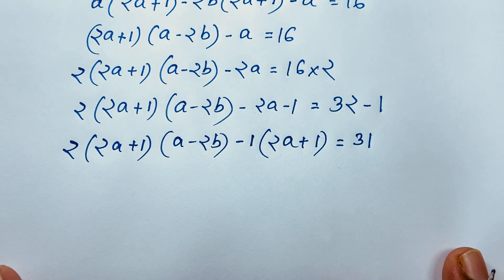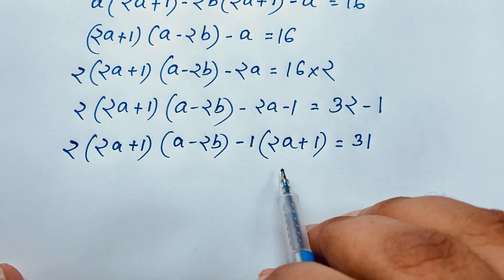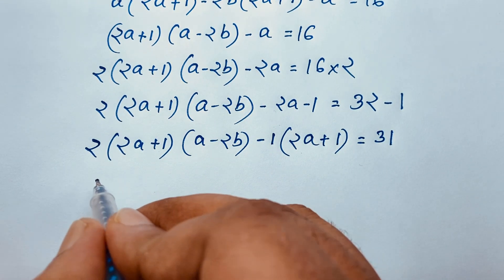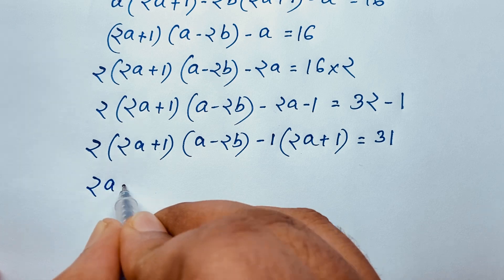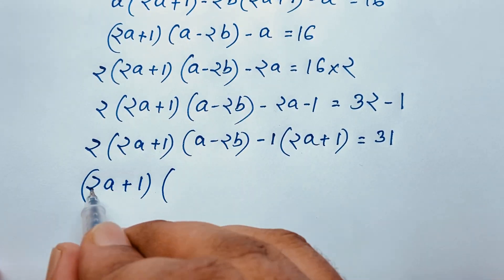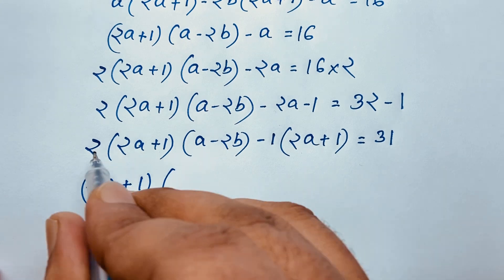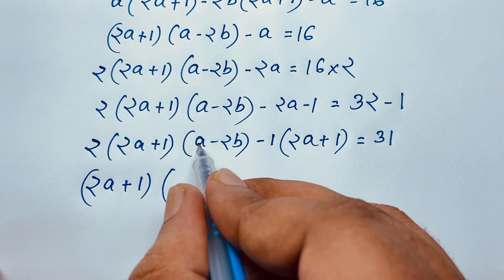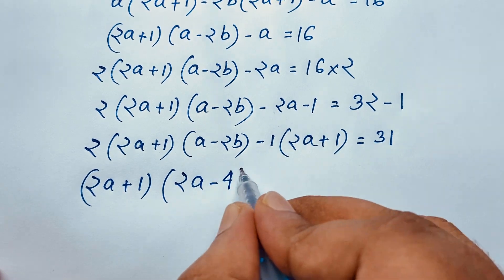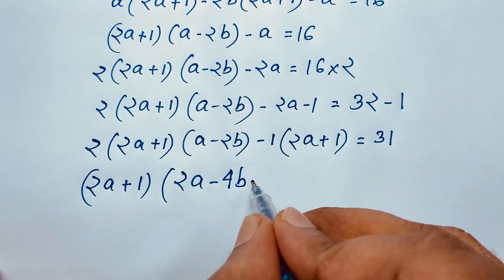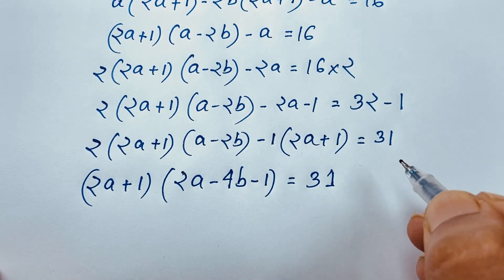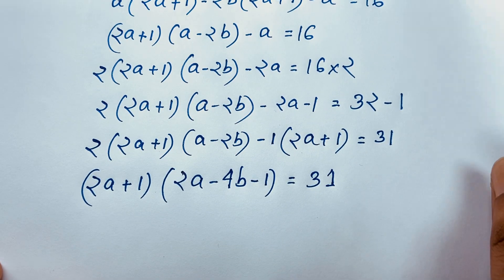Now (2a + 1) is common again. Factoring it out: (2a + 1) times (2a minus 4b minus 1) equals 31. Now we find the factor pairs of 31.